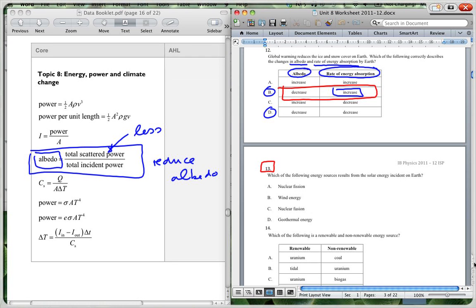Question 13. Which of the following energy sources result from solar energy incident on the earth? Nuclear fission? No. This is actually B, wind energy.